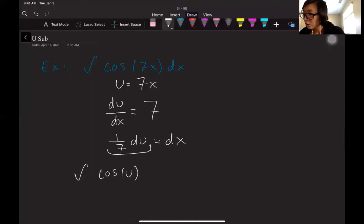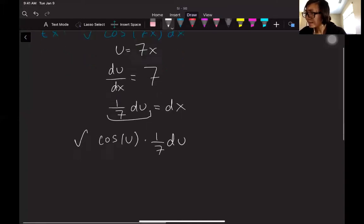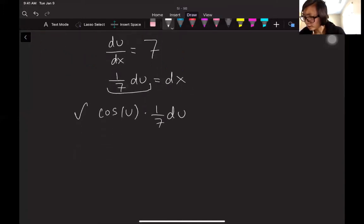to be my dx. Down at the bottom, I will have 1 over 7 du. This is pretty simple. 1 over 7 is a constant, I can pull that out. I have cosine of u du. Cosine of u, the integral of cosine of u is sine of u, so I